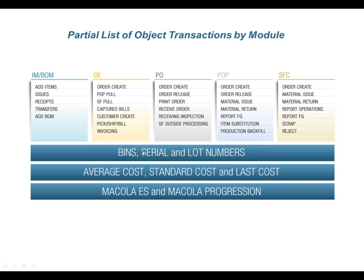We also support bins and serial lots as a layer across all transactions. We support average cost, standard cost, and we do some last costing, though almost no customers are actually using the last cost model in Macola. Our objects are transparent to both Macola ES and Macola Progression — you just point the methods of each transaction towards a database and a server, and we detect which version of Macola you're using. The parameters and properties of all transactions and methods are normalized to work across both Macola ES and Progression.